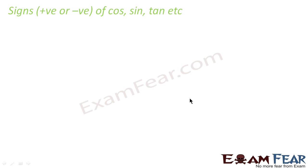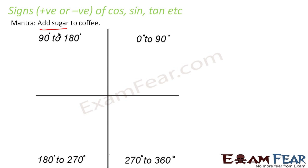Here we have a mantra: 'Add Sugar To Coffee.' So 'A' becomes All, 'Sugar' becomes Sine, 'T' becomes Tan, and 'C' becomes Cos. This helps us remember which trigonometric functions are positive in each quadrant.